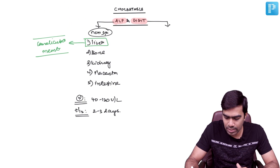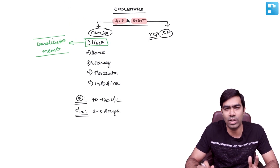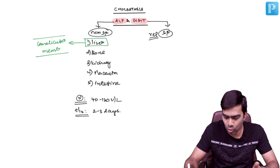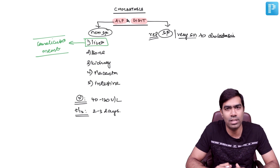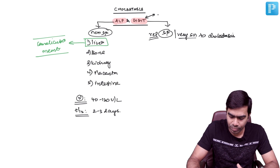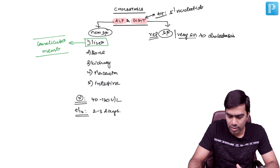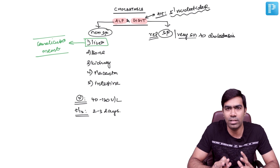GGT is relatively specific — not 100% specific, but relatively specific for liver and bile radicals. Whenever GGT is elevated, it is almost certain that you are having a hepatobiliary problem, some form of cholestasis. GGT is also relatively very sensitive to cholestasis, meaning it is the first marker to rise in cholestasis. An alternative to GGT is 5-prime nucleotidase, which is also similar to GGT and is also present only in the bile radicals to an extent.